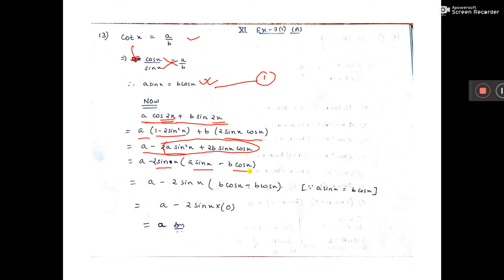Here it is left b cos x. Now here you see a sin x equal to b cos x. So in place of a sin x you put b cos x.